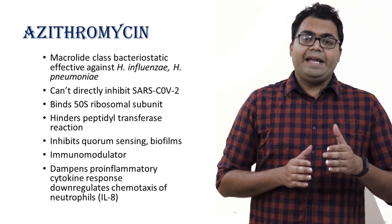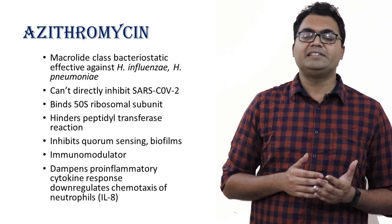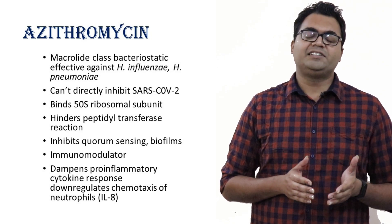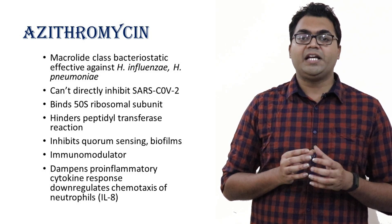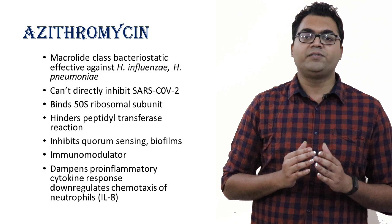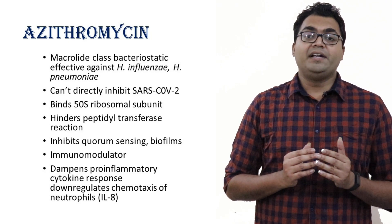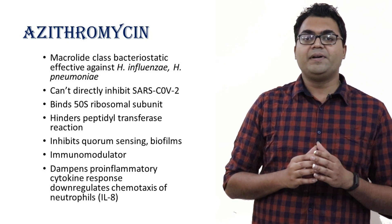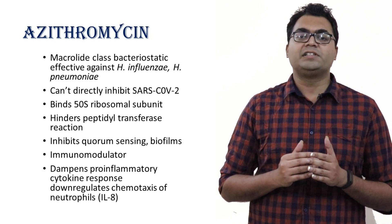It will inhibit topoisomerase and inhibit replication, or inhibit RNA polymerase and inhibit transcription, or it can inhibit ribosomes to inhibit the translation process. What Azithromycin does is it inhibits the 50S ribosomal subunit. The 50S ribosomal subunit is responsible for the peptidyl transferase reaction. When it inhibits the 50S ribosomal subunit, it takes away the peptidyl transferase activity, thereby inhibiting the elongation process of prokaryotic translation.